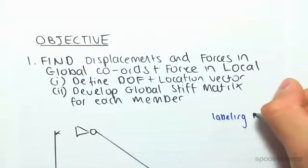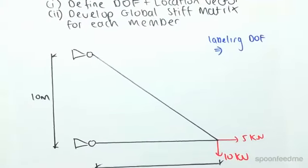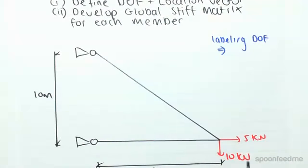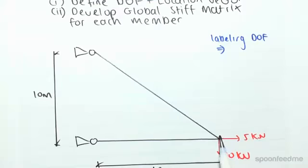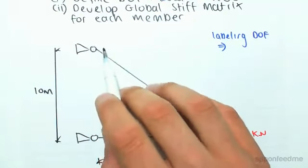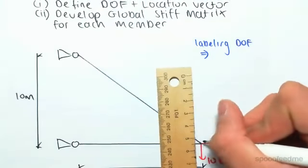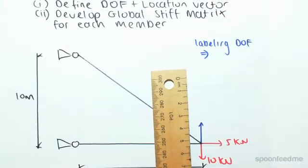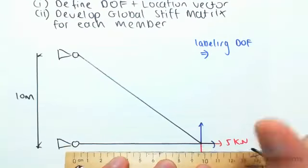The important thing when labeling degree of freedoms is you want to label them in the order where you start where the truss is free to move. You can see at this pin joint here it's restrained to move in the x and y direction, whereas at this point here this point can move up and down and left and right, so we want to label that first. It might not make sense why we're doing that now, but when we go through this example you'll see the point of doing this.